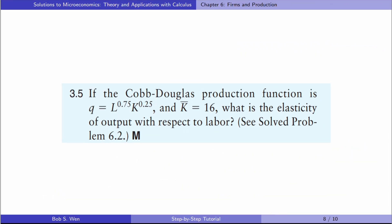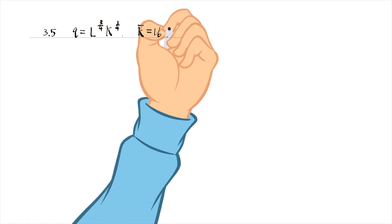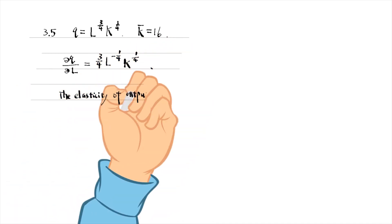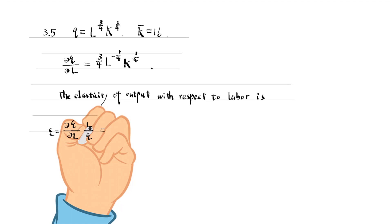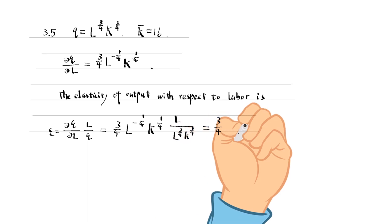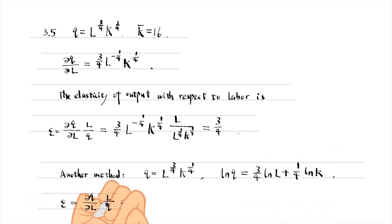Let's solve exercise 3.5. If the Cobb-Douglas production function is as given and capital equals 16, what is the elasticity of output with respect to labor? The derivative of output with respect to labor is as follows. The elasticity of output with respect to labor, epsilon, is the percentage change in output over the percentage change in labor. It equals 3 over 4 — a constant that does not depend on capital. Another method is to take the logarithm on both sides and use another expression of elasticity to obtain the answer.